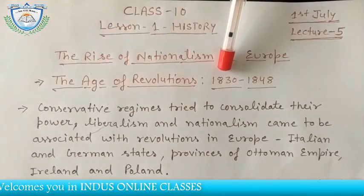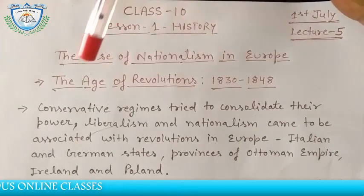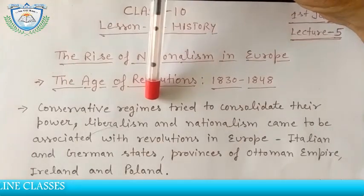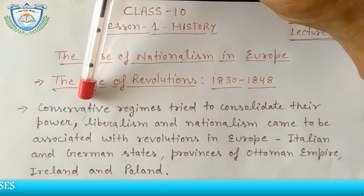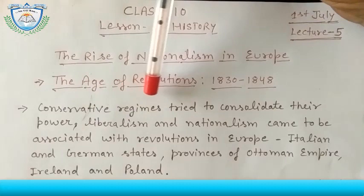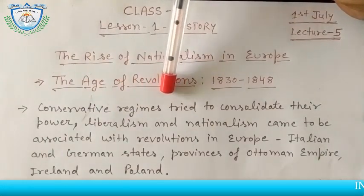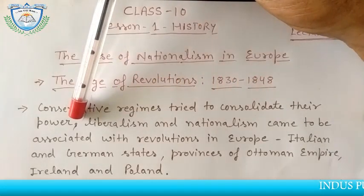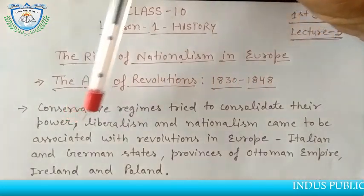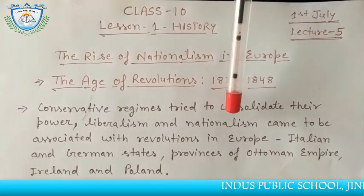From 1832 to 1848 in Europe, the conservative regimes — meaning kingdoms that were based on the old pattern of society — were established during the Vienna Congress in 1815 after the defeat of Napoleon. They tried to consolidate their power, and the liberals — people who believed in liberty and nationalism —